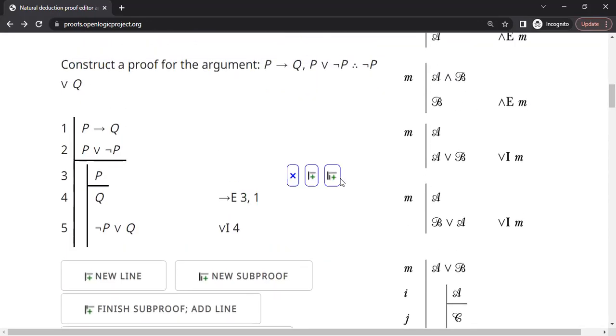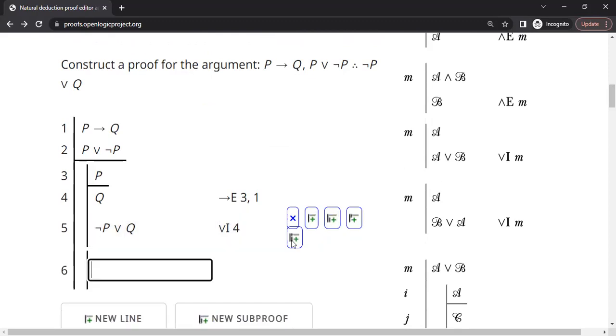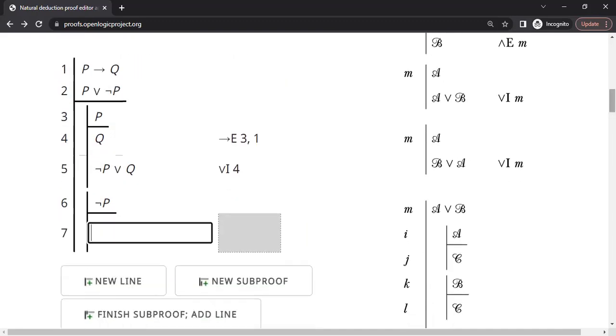All right. So now we start with P as an assumption. We end up with NOT P or Q. We will create another assumption. What are the assumptions we have? We have P as an assumption. We are done with P holds NOT P or Q. Now we start with NOT P as an assumption. We can easily go ahead and introduce a Q here because of OR introduction to line number six.